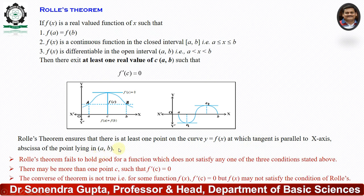There are some important points, called notes. Number 1: Rolle's Theorem fails to hold good for a function which does not satisfy one of the three conditions stated above. There may be more than one point c such that f'(c) = 0, and the converse of the theorem is not true — that means for some function f(x), f'(c) = 0 but f(x) may not satisfy the conditions of Rolle's Theorem.